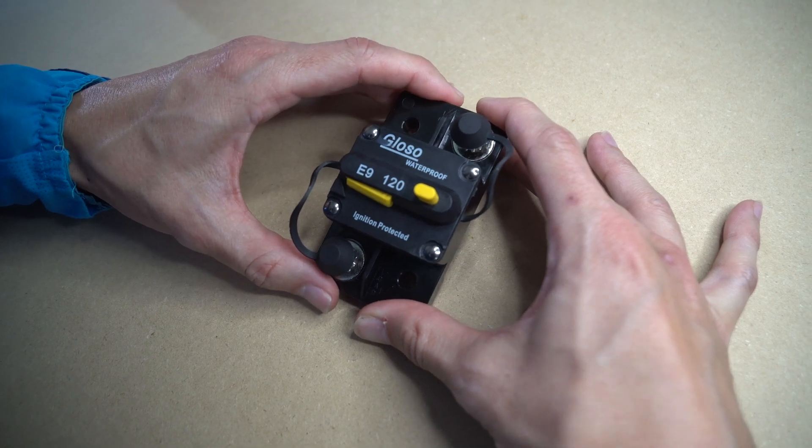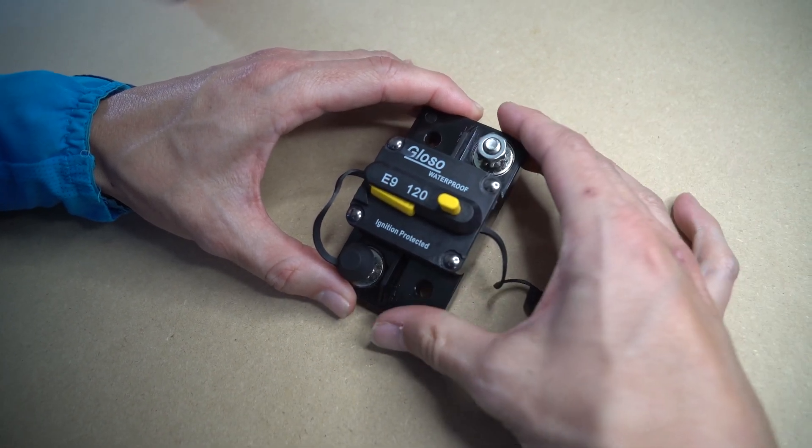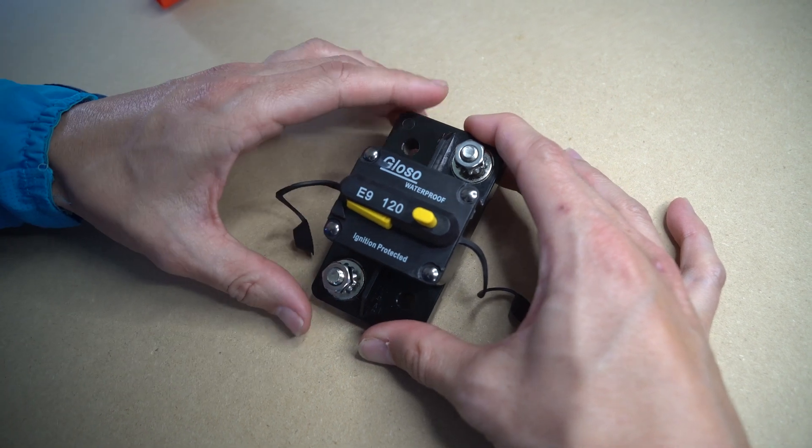This particular breaker uses quarter of an inch terminal posts, so you will need quarter of an inch copper lugs to make your connections.